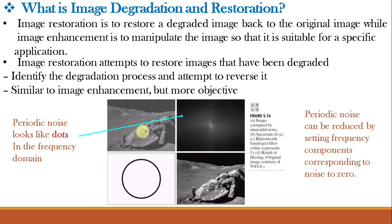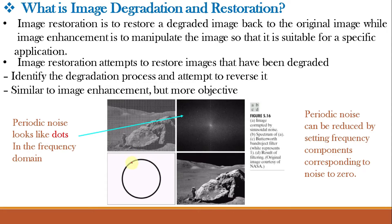For example, consider an image corrupted by sinusoidal noise. The spectrum of this image shows dots arranged in a circle, representing periodic noise in the frequency domain. Applying a Butterworth band reject filter — where white is 1 and black is 0 — rejects this particular band, meaning the dots in the circle representing periodic noise are rejected, resulting in a clear image without sinusoidal noise.